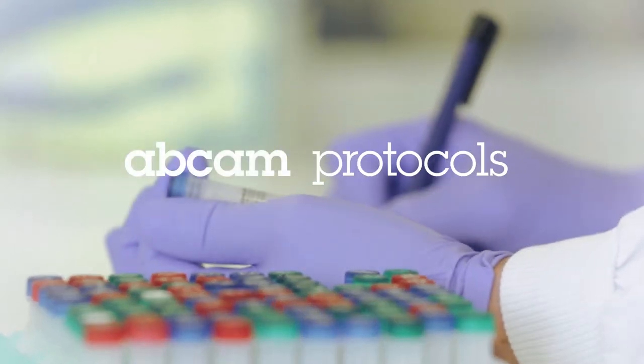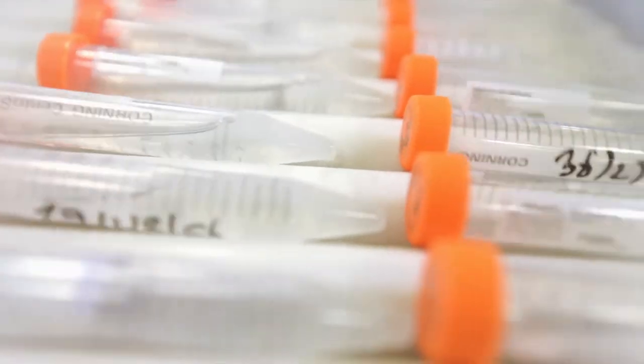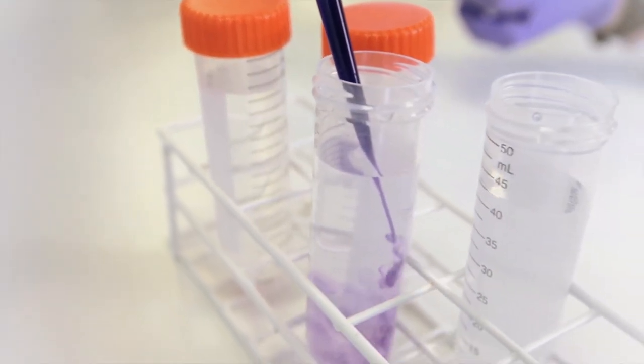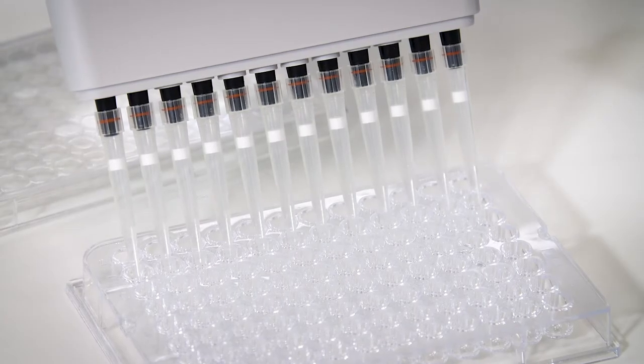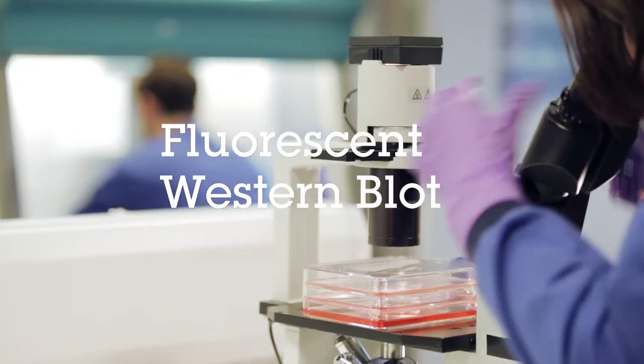Fluorescent Western blotting uses secondary antibodies that are conjugated to fluorescent labels, enabling multiple proteins to be viewed simultaneously. It is a powerful technique, ideal for multiplexing and quantitative analysis over a large dynamic range.